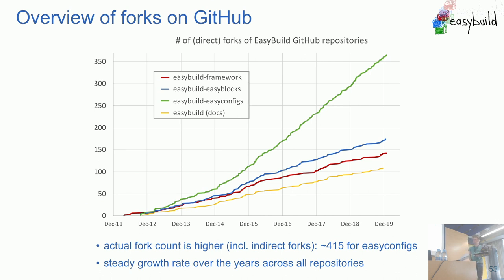Looking at forks on GitHub of the different EasyBuild repositories: the green line is the EasyConfigs repository where we get by far the most pull requests — GitHub says 415 forks, though pulling down the data gives 350, plus there are indirect forks. It keeps going up at the same rate, so the community is still growing. The framework and EasyBlocks repositories get fewer forks because contributing there requires Python coding rather than just changing a version number.